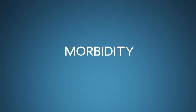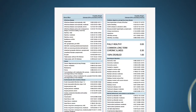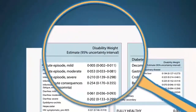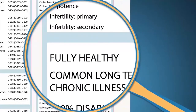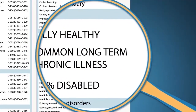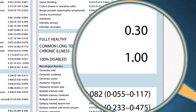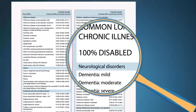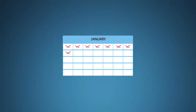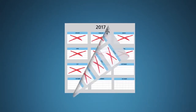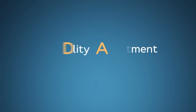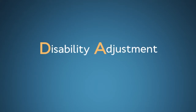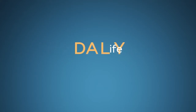Morbidity is a bit more complicated to calculate. First, each illness effect is given a severity rating called a disability weight, ranging from 0, which means fully healthy, to 0.3, which is common for long-term chronic illnesses, to 1, which means 100% disabled. Next, because effects can be short or long-term, the duration of the morbidity is factored in. Think of this as the DA in DALY, or disability adjustment due to morbidity. When both mortality and morbidity contributions are added together, you have a full DALY score.